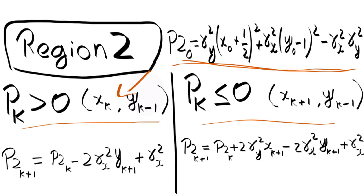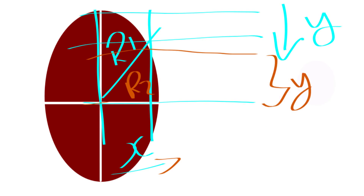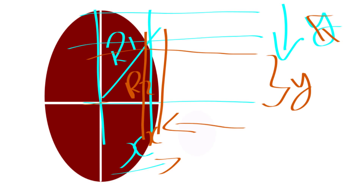For region two, pk > 0 or pk ≤ 0 determines specific formula sets. Why is it different for region one and region two? In region two, the y-axis extent is larger than x, so it's easy to remember: we need two sets of formulas to control y during region one and x during region two, so as to draw one quadrant of the ellipse and then copy it to the other three quadrants. This is the basic idea behind the midpoint ellipse algorithm.